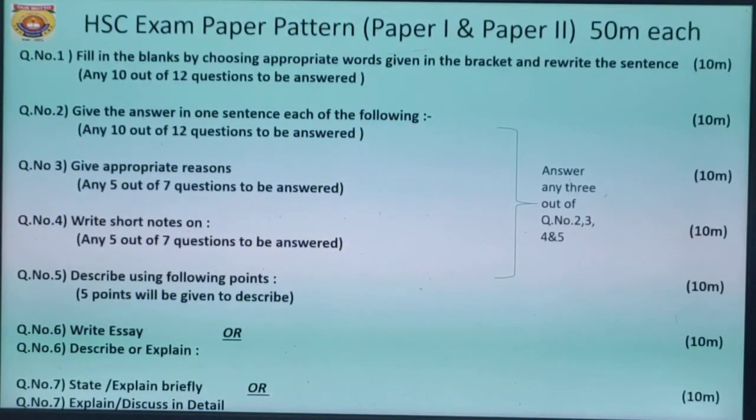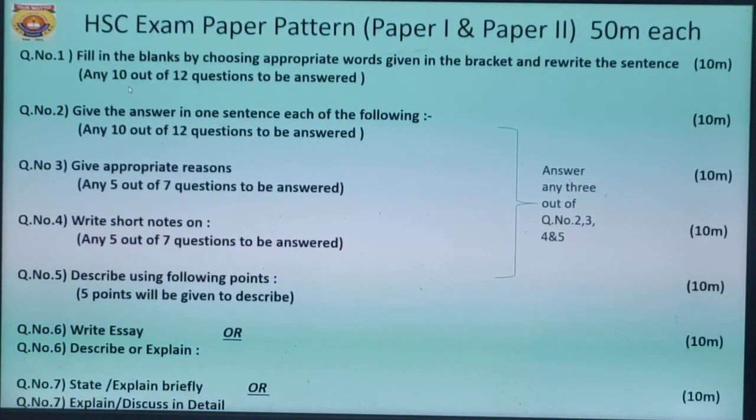Now I'm discussing with you the HSC exam paper pattern. The paper pattern for paper 1 and paper 2 is the same; it consists of 50 marks each as we have discussed earlier. Question number 1 is fill in the blanks by choosing appropriate words given in the bracket and rewrite the sentence. This consists of 10 marks. As discussed earlier, this question number 1 is compulsory. You have to answer any 10 out of 12 questions, that is 1 mark each. Question number 2: give the answer in one sentence each of the following. Here also, any 10 out of 12 questions are to be answered. This also consists of 10 marks.